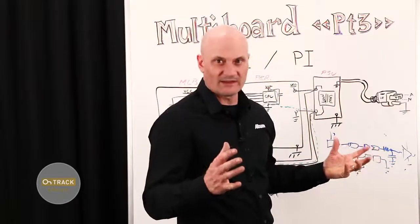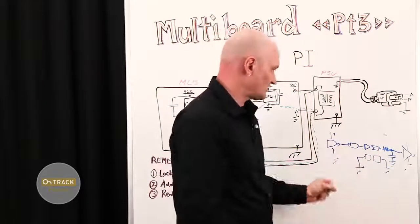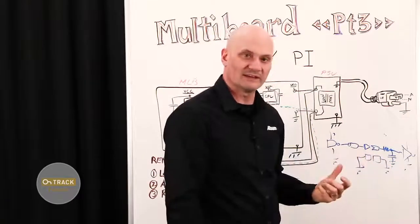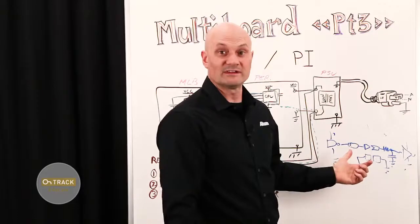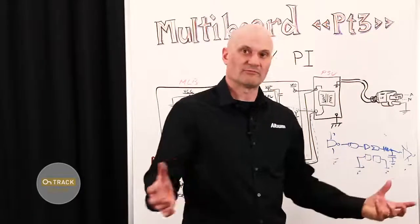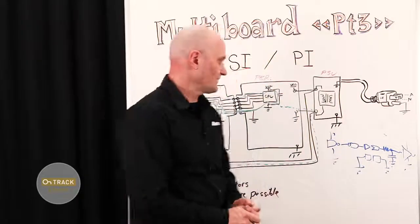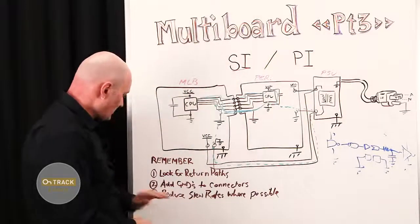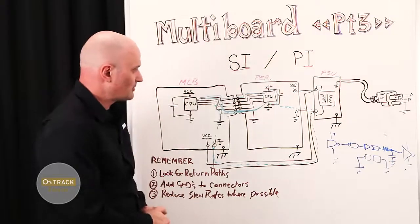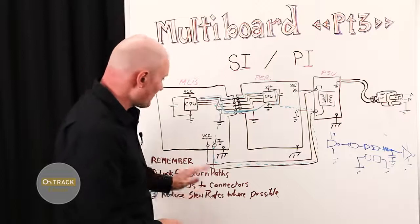You're reducing the frequency content of your signal so that you're not going to be radiating and failing your testing. So point three: reduce slew rates where possible, and just be aware of these things.